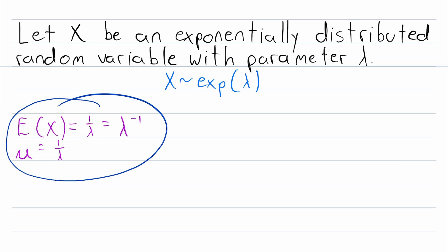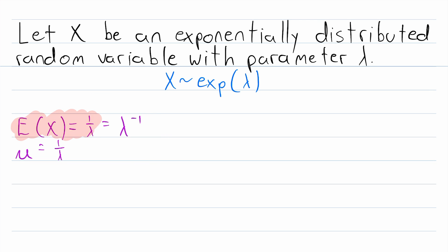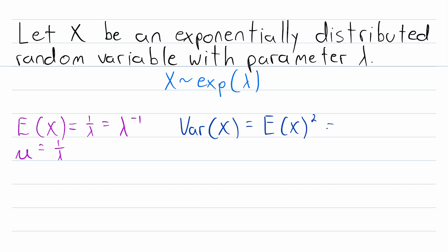In the interest of time, we're not going to prove this today, but we will demonstrate it from first principles in another lesson. If you remember the definition of the expected value of a continuous random variable, you might be able to prove this yourself. The variance of an exponential random variable is just the square of the expected value — the square of the mean — which equals 1 over lambda squared, or lambda to the power of negative 2.